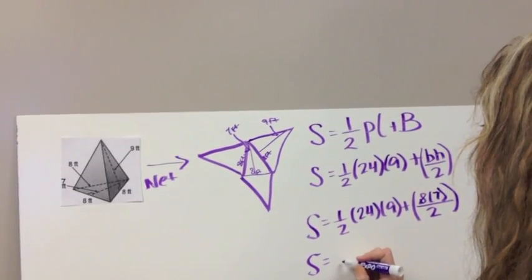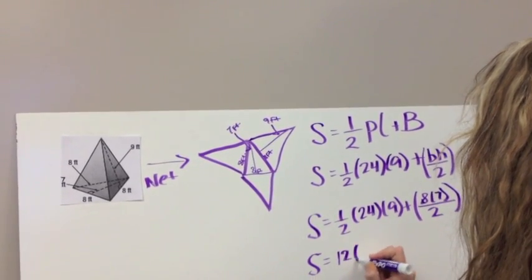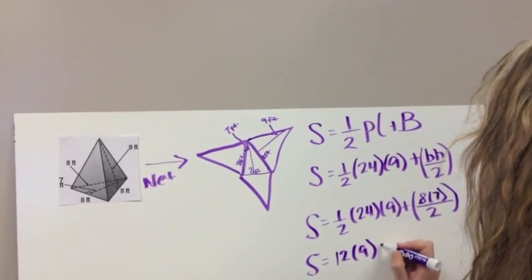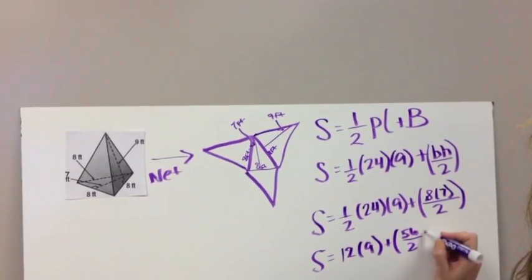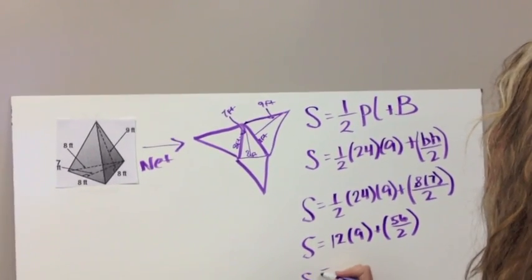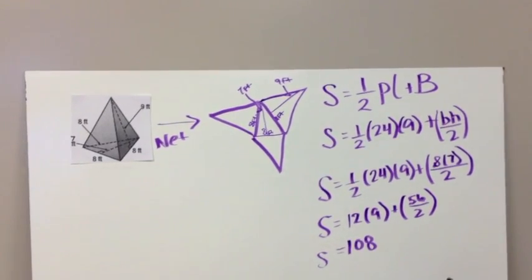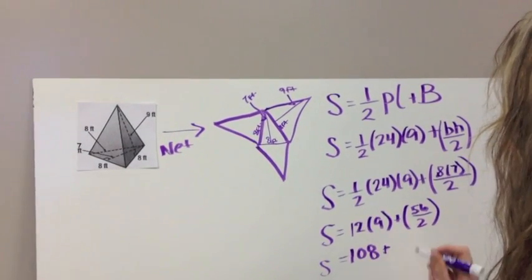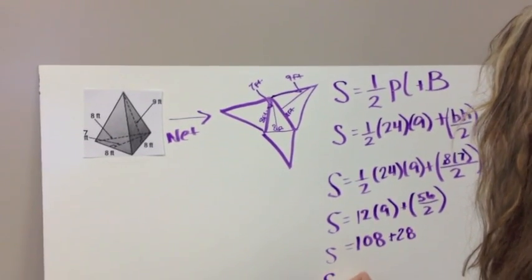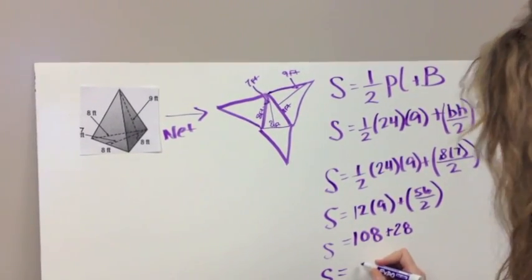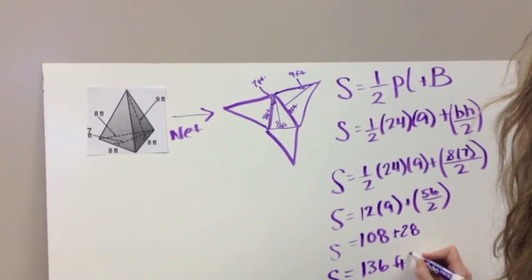Now let's start simplifying that. Half of 24 is 12 times 9 plus 8 times 7 is 56 divided by 2. Getting smaller and smaller. This is going to be 108 plus 28. So now our total surface area is going to be 136 feet squared.